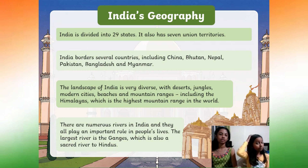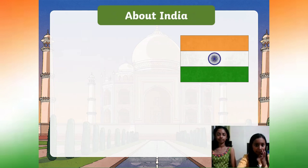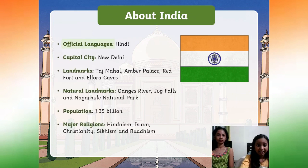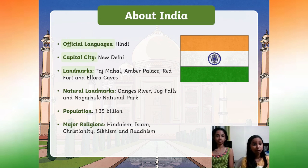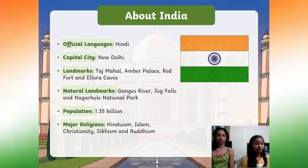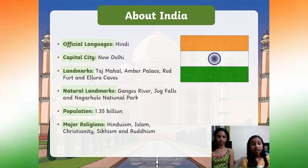The largest river is the Ganges, which is also a sacred river to Hindus. About India: Official language — Hindi. Capital city — New Delhi. Landmarks include the Taj Mahal, Amber Palace, Red Fort, and Ellora Caves. National landmarks include the Ganges River, Rajag Falls, and Nagarhole National Park. The population of India is about 1.35 billion. Religions include Hinduism, Islam, Christianity, Sikhism, and Buddhism.